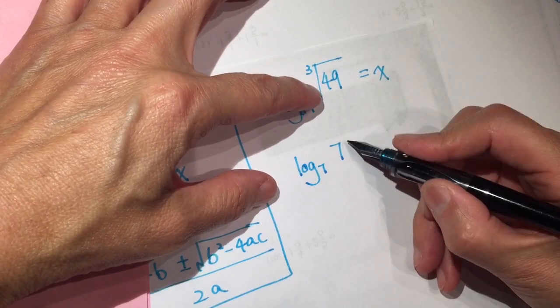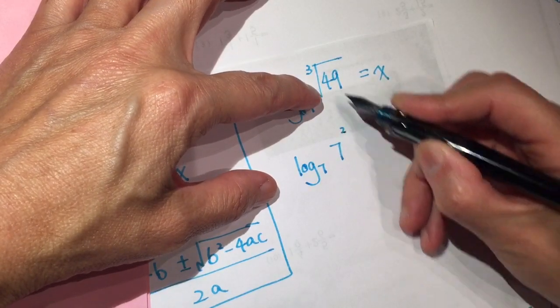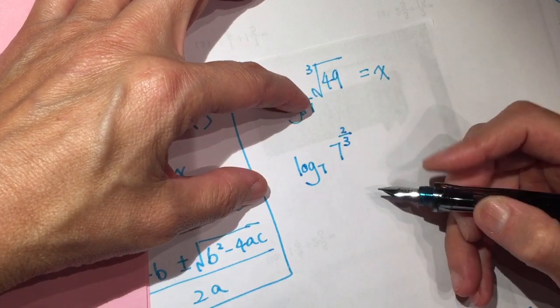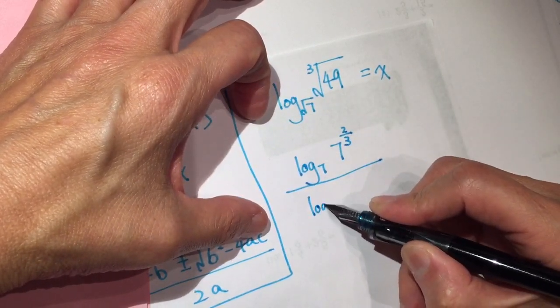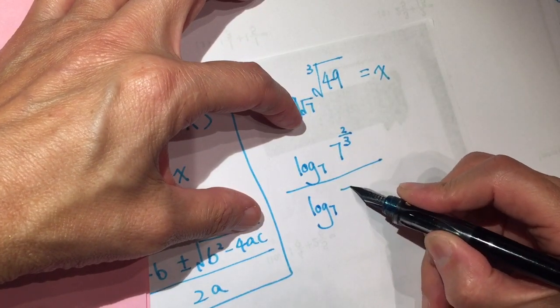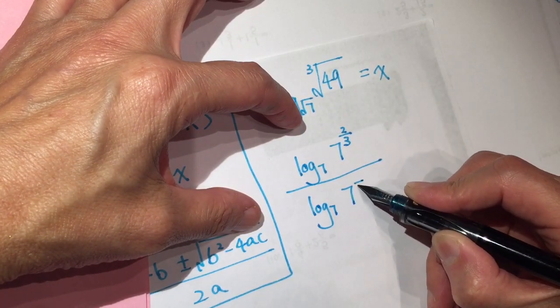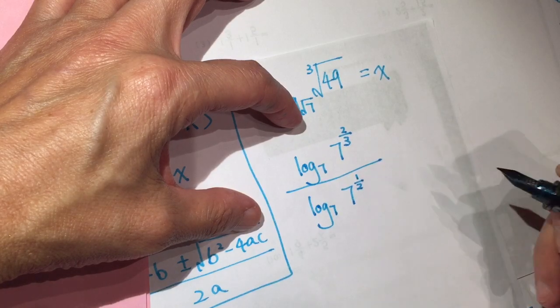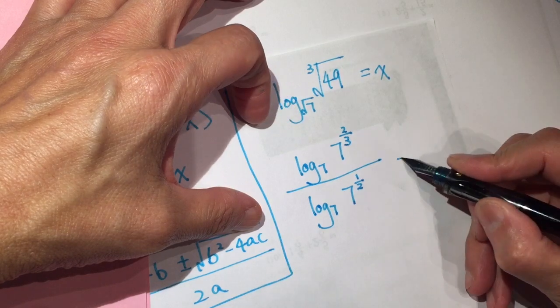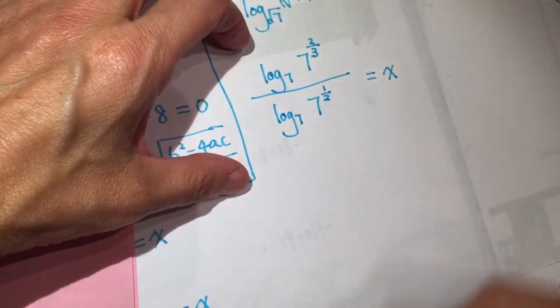So log 7 of 49 is 7 to the power of 2, and cubic root is 1/3, right? And log 7 of square root 7 is 7 to the power of 1/2 equals X.